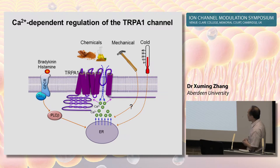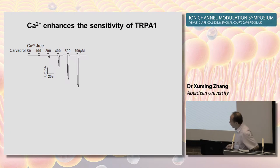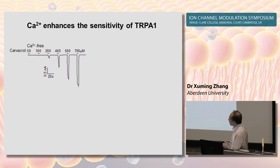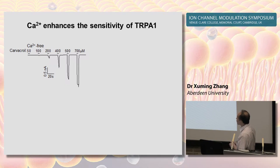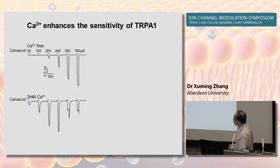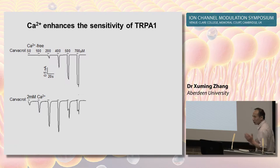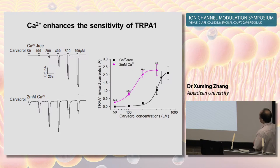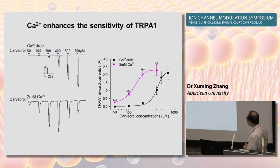Calcium-dependent regulation of this TRPA1 channel is a fundamental mechanism that diversifies channel function, but it remains unknown how calcium works on these channels. To understand the modulation of TRPA1 by calcium, we recorded TRPA1 currents using the non-electrophilic agonist carvacrol. Carvacrol elicited progressively larger TRPA1 currents in the absence of calcium. However, when 2 mM calcium was included, TRPA1 currents were significantly enhanced at lower doses, while at higher doses such as 500–700 µM, currents were much smaller, apparently due to desensitization. Analysis of the dose-response curve clearly shows that calcium robustly enhanced basal sensitivity of the channel, seen as a marked leftward shift of the curve.